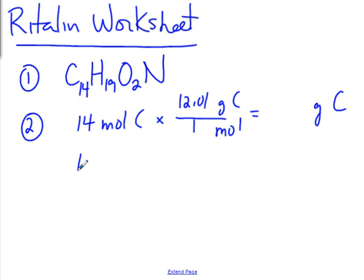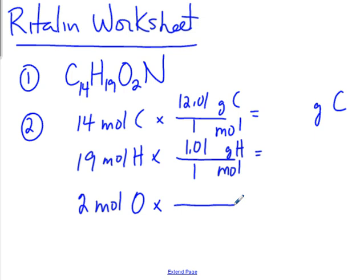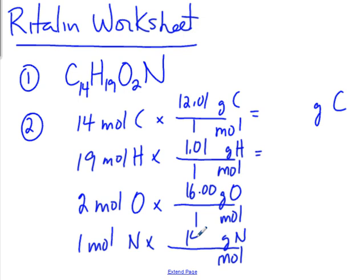19 moles of hydrogen. Periodic table. Oxygen, same way. And finally nitrogen. And pay attention to sig figs when you're doing this. Usually, when I do molar masses, I keep two decimal places. 99% of the time, that will agree with sig figs.